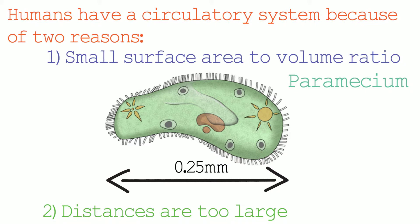Humans have evolved to have a circulatory system so that substances can be transported around the body. Some examples of substances transported were listed at the start of this video, such as oxygen, carbon dioxide, nutrients, and hormones. To summarize, the two reasons why we have a circulatory system are because the human body has a small surface area to volume ratio, and the distances in the human body are too large.